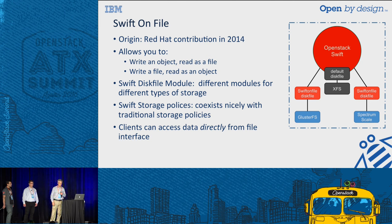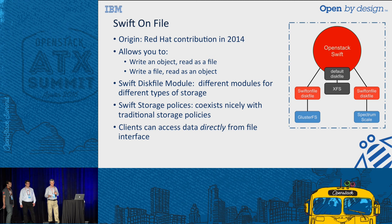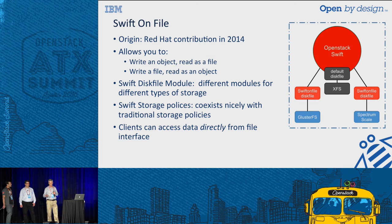Swift on File is implemented as a disk file module. The object server has a plug-in point, and you can have different disk files depending on the type of underlying storage. The disk file is responsible for abstracting away the details of that underlying storage and providing a common interface across different storage types. There are also Swift storage policies that allow Swift on File to fit nicely into this environment, coexisting with the traditional Swift layout. The key point is that clients can access data directly from the file interface — they don't need to go through a gateway, there's no copying of data, they're accessing it directly for the highest performance.